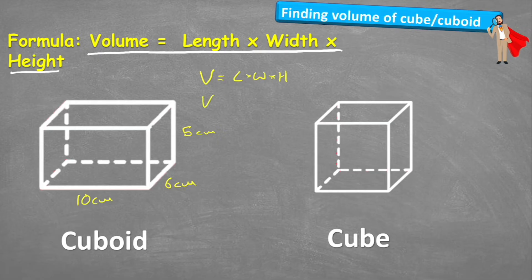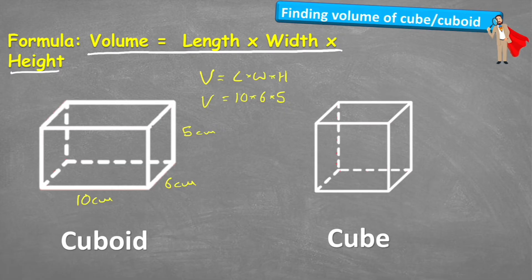So volume is equal to 10 times 6 times 5. What we know about multiplication is that it's commutative, so it doesn't matter which way around we do these multiplications — we're going to get the same result. Unless you have a calculator, pick the order that's easiest. So volume equals 10 times 6, which is 60, times 5, which is 300.